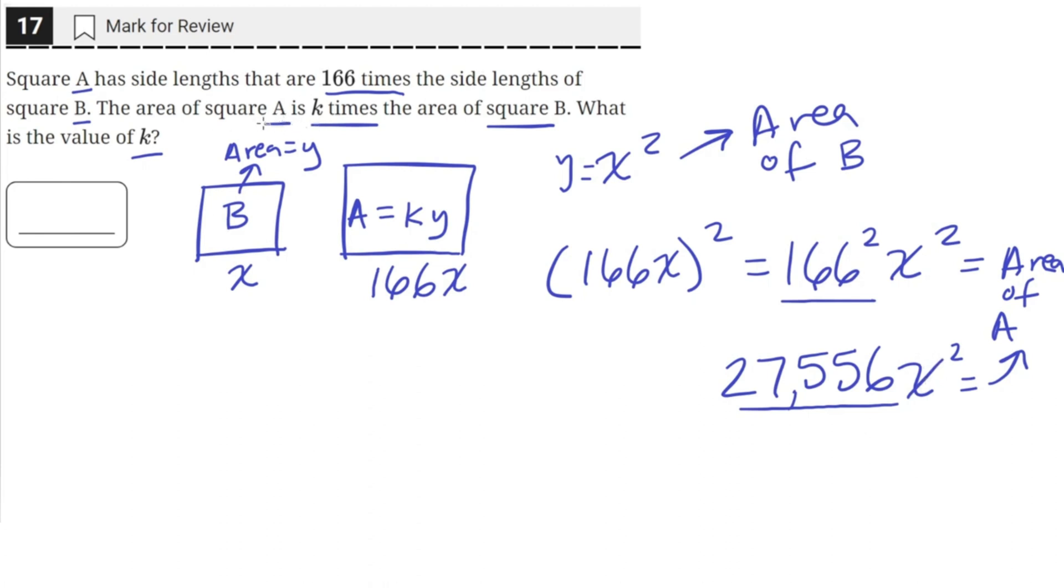And the problem statement said that the area of A is k times the area of B. And the area of B is just this x squared. So the coefficient of the area of B is equal to k. So the answer is 27,556.